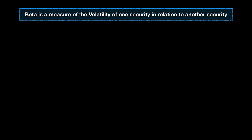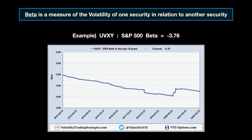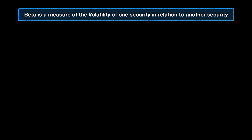First we have to define what beta is and how to interpret it, because there's a lot of useful information in that value. Beta is a measure of the volatility of one security in relation to another security — essentially how much something moves in relation to something else. It's typically measured against the stock market. For example, volatility traders can calculate the beta factor of UVXY, a very popular volatility ETP, and measure it against the S&P 500 to see how much the UVXY moves in relation to the S&P 500. I'll show you the UVXY beta calculation in an Excel spreadsheet in a minute, but first we need to know how to interpret the beta value.